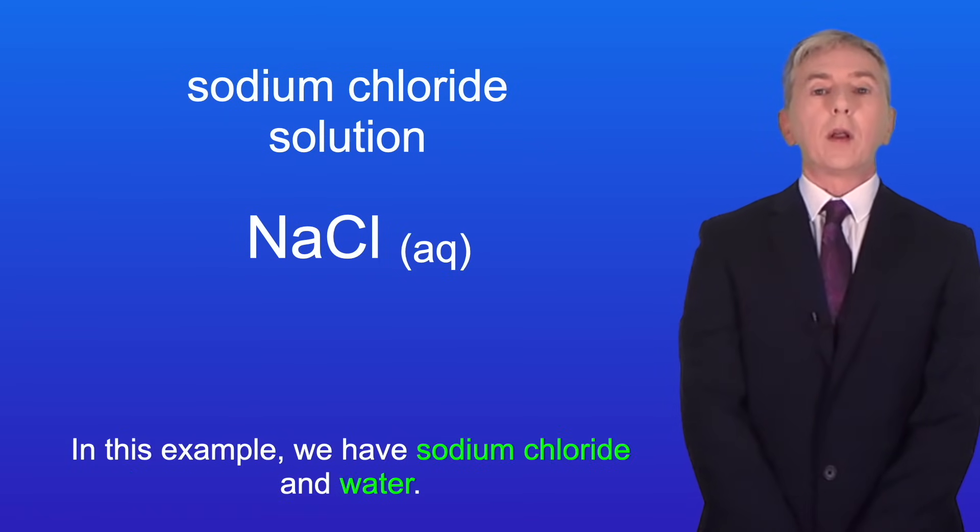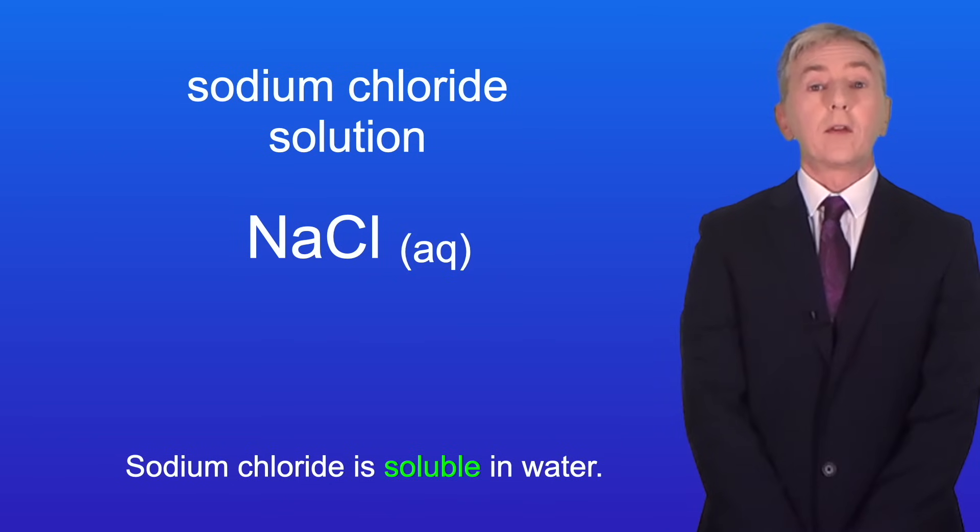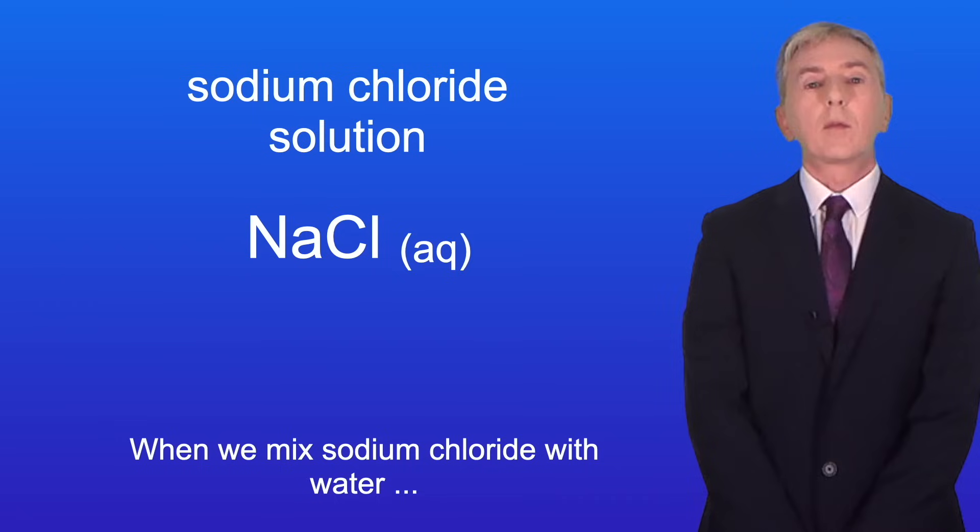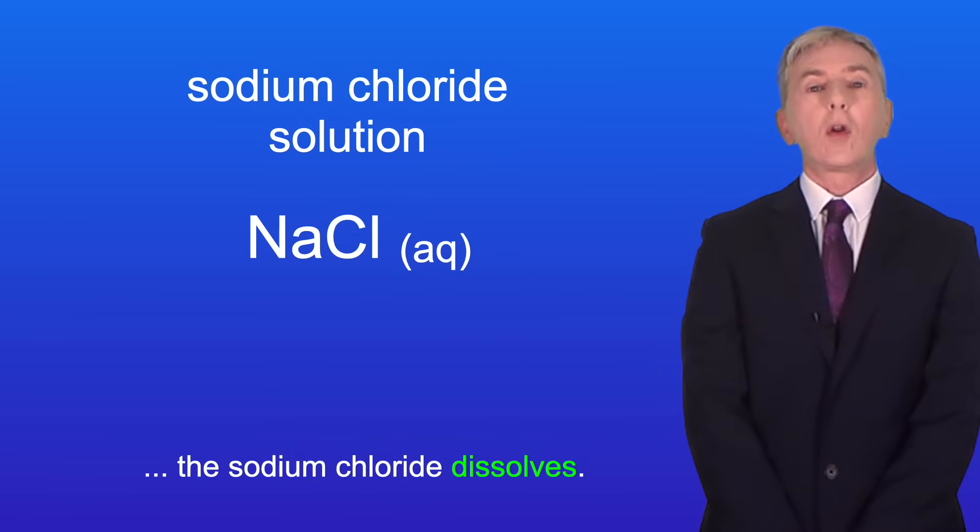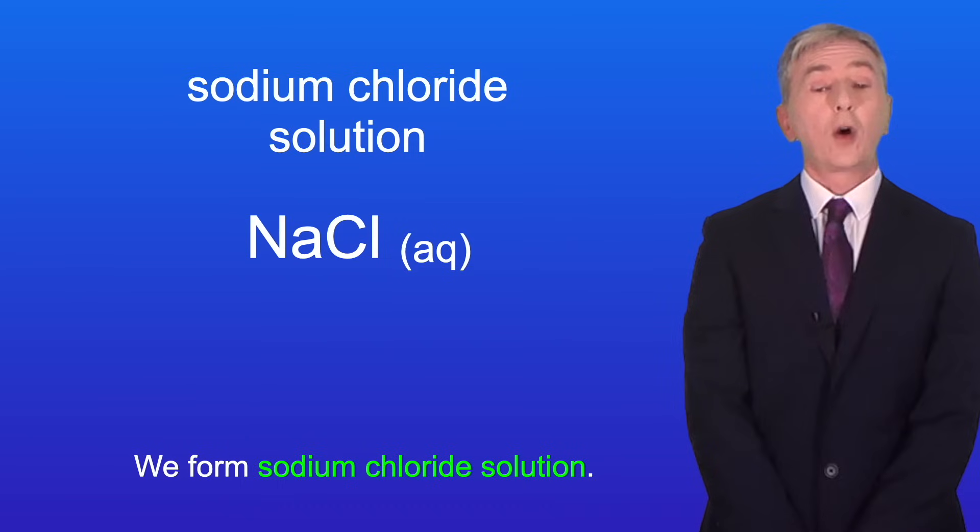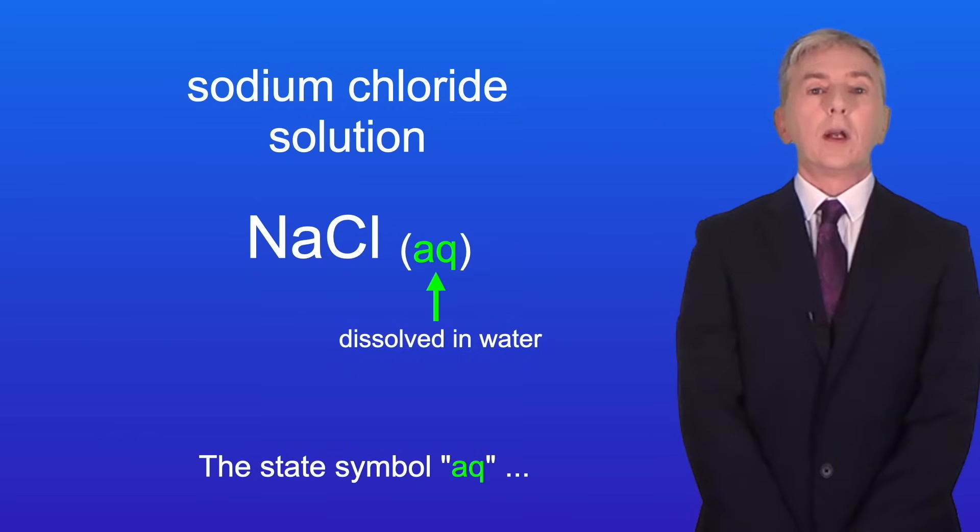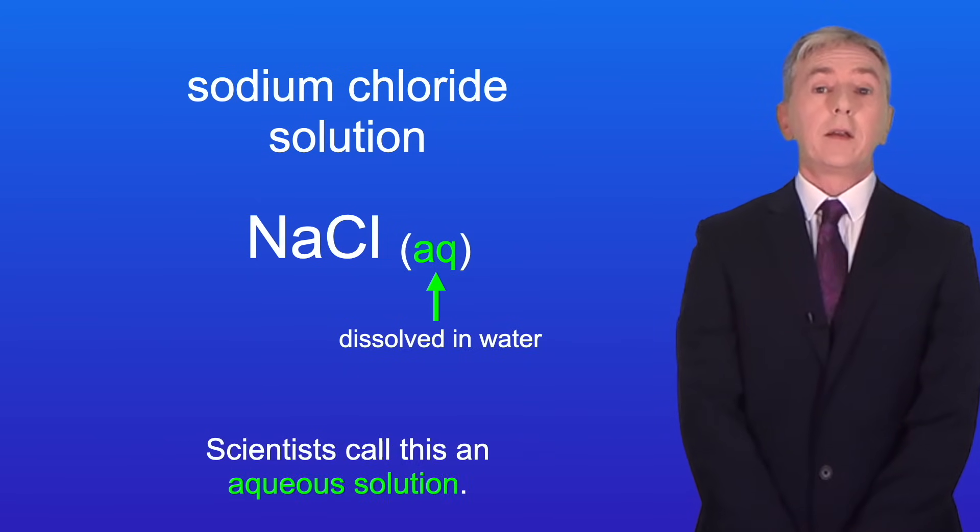In this example we have sodium chloride and water. Sodium chloride is soluble in water. So when we mix sodium chloride with water the sodium chloride dissolves and we form sodium chloride solution. The state symbol Aq means that the sodium chloride is dissolved in water and scientists call this an aqueous solution.